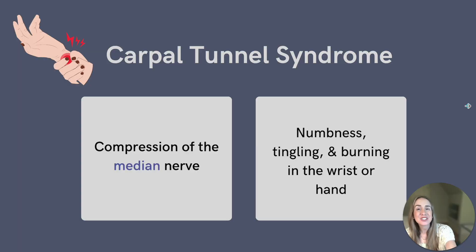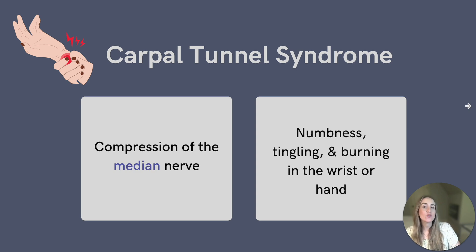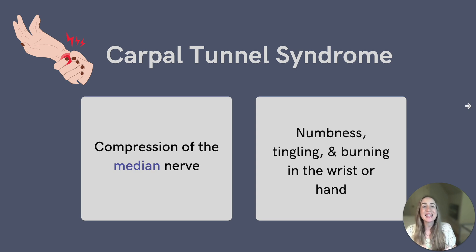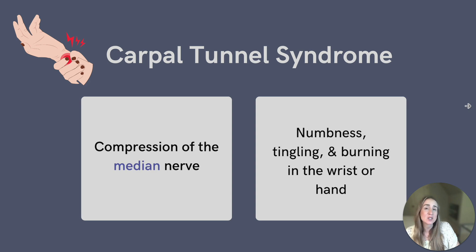So let's first discuss carpal tunnel syndrome. This condition occurs when the median nerve, which runs through the carpal tunnel on the palm side of the wrist, is compressed. Due to this compression, patients can experience numbness, tingling, even burning in the wrist or hand. This can be very painful for patients and make it difficult to complete daily tasks with their hands.